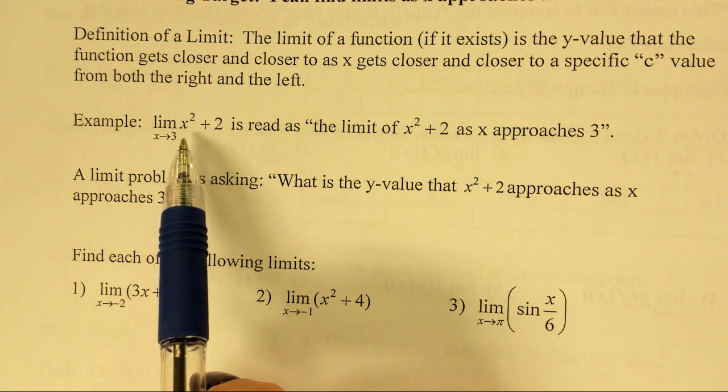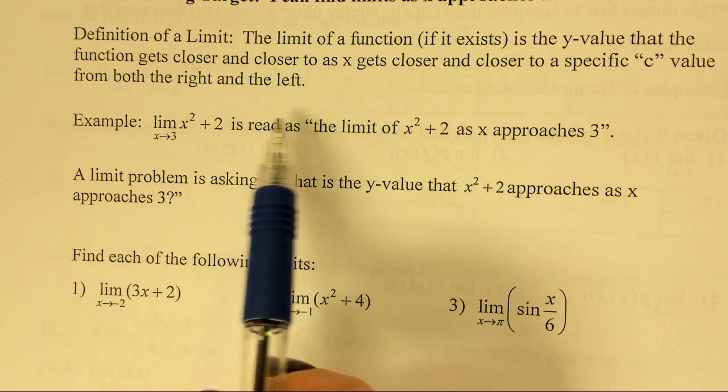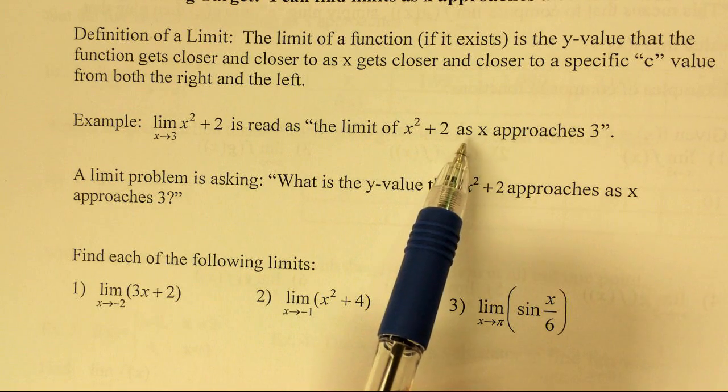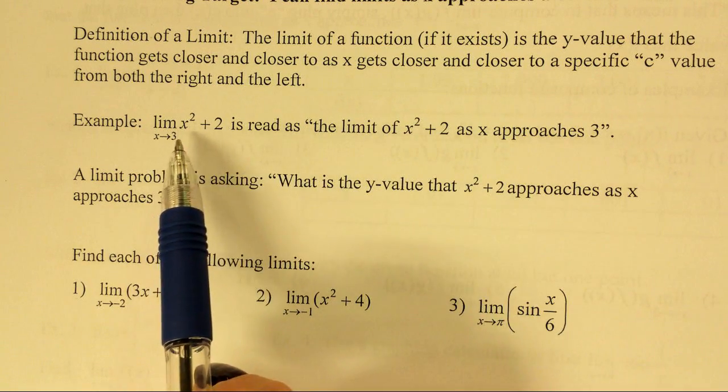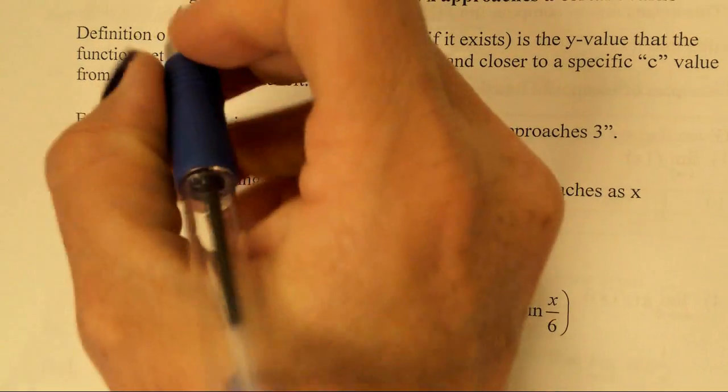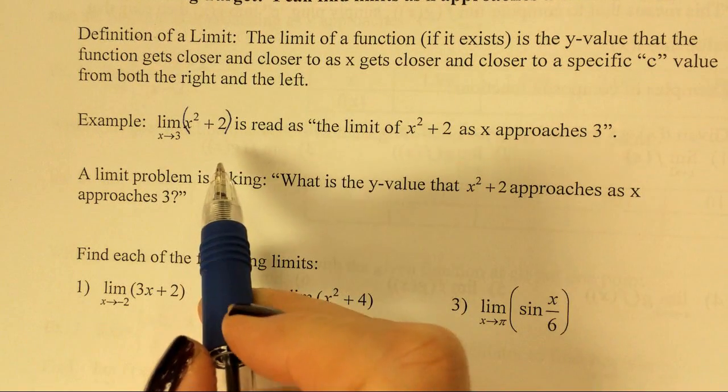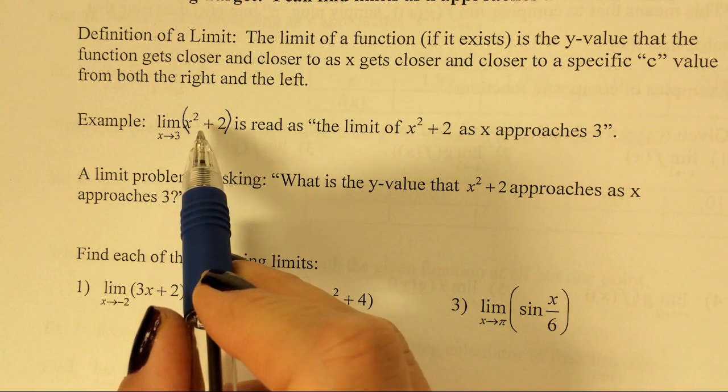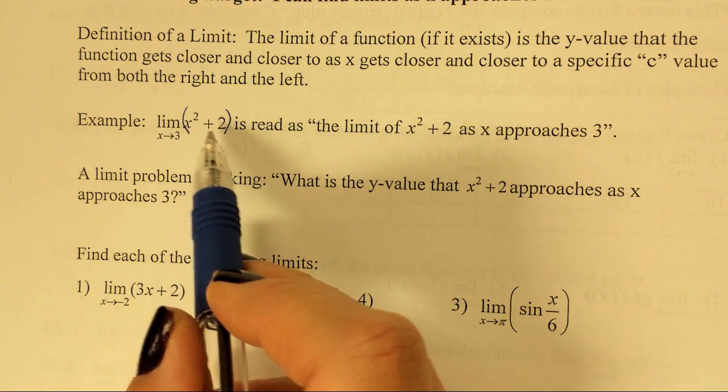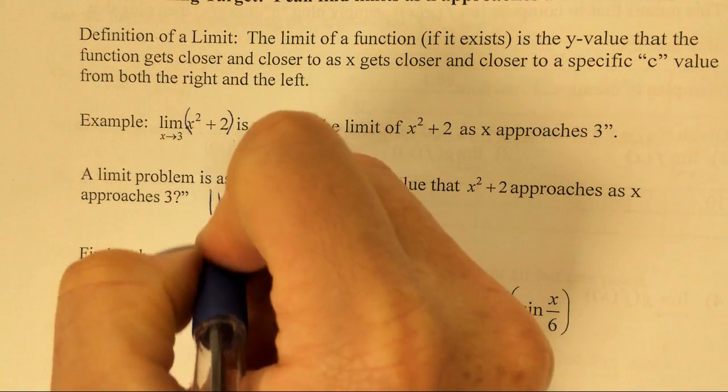This is the way that we read a limit. This notation is read as the limit of x squared plus 2 as x approaches 3. To evaluate this limit, I look at my function. This should actually be in parentheses here. To evaluate this, I'm simply going to plug in the number 3. 3 squared is 9 plus 2 is 11. So the answer to this would be 11.